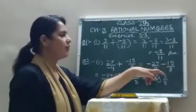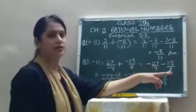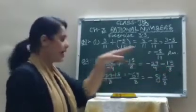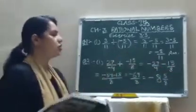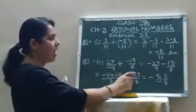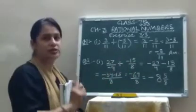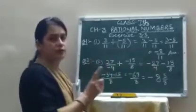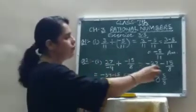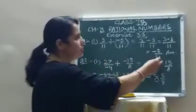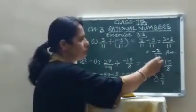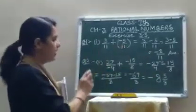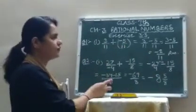Now take the LCM of the denominators. The LCM of 4 and 8 is 8. You check: 8 comes in the table of 4 — 4 twos are 8. So you multiply minus 27 also by 2, giving minus 54.